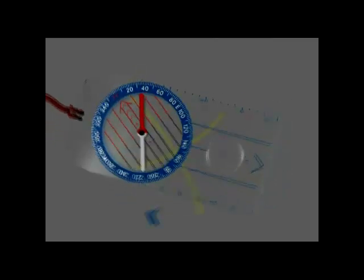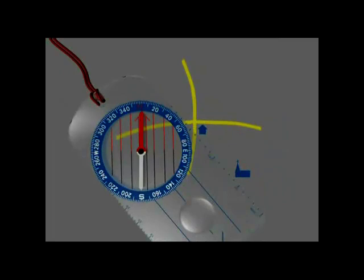Now if we line up the compass needle with the marked red arrow in the dial, the arrow on the base plate is pointing on a bearing of 140 degrees. It points from the crossroads towards the church.